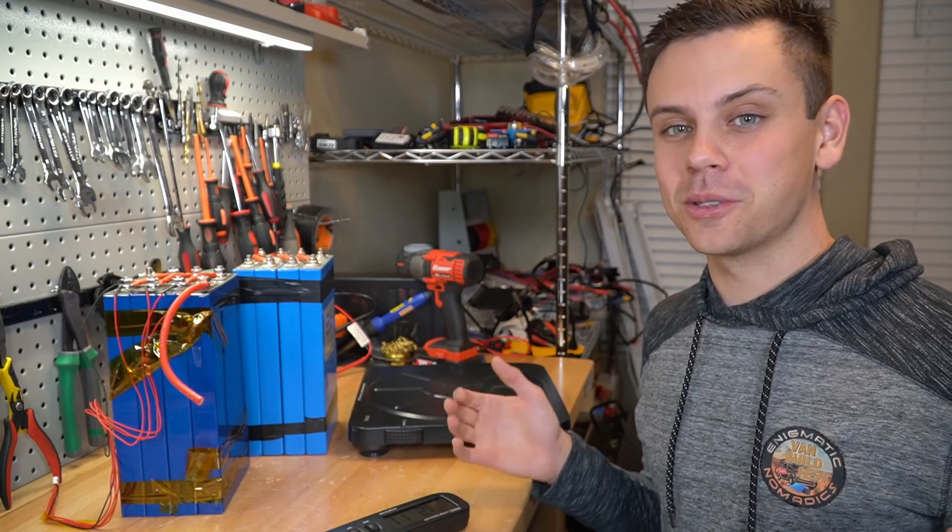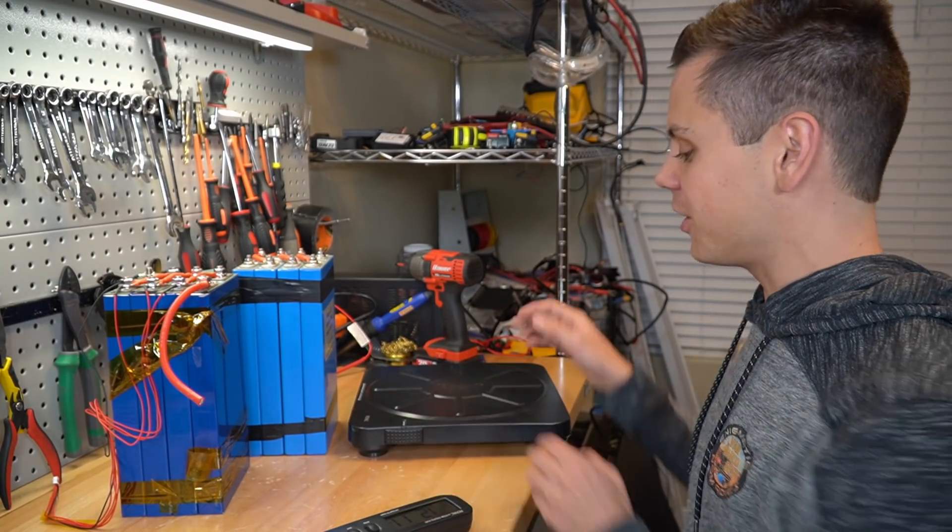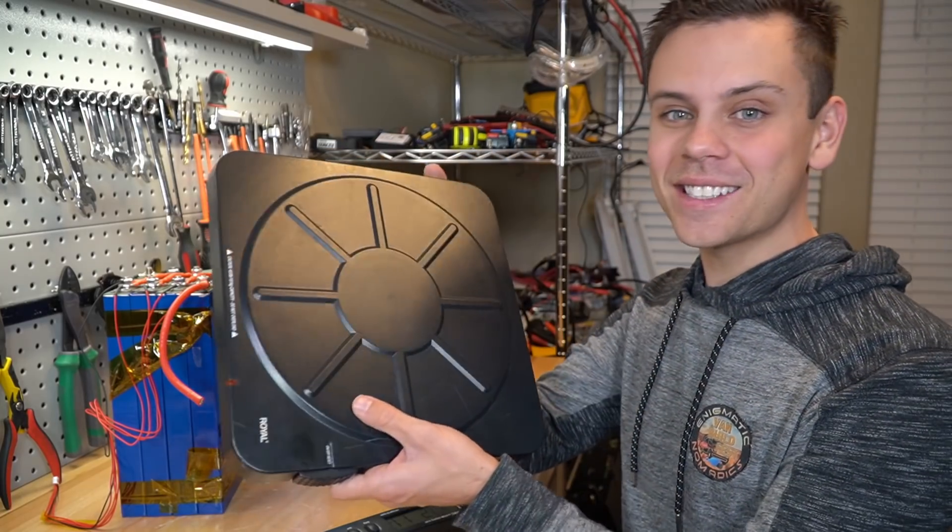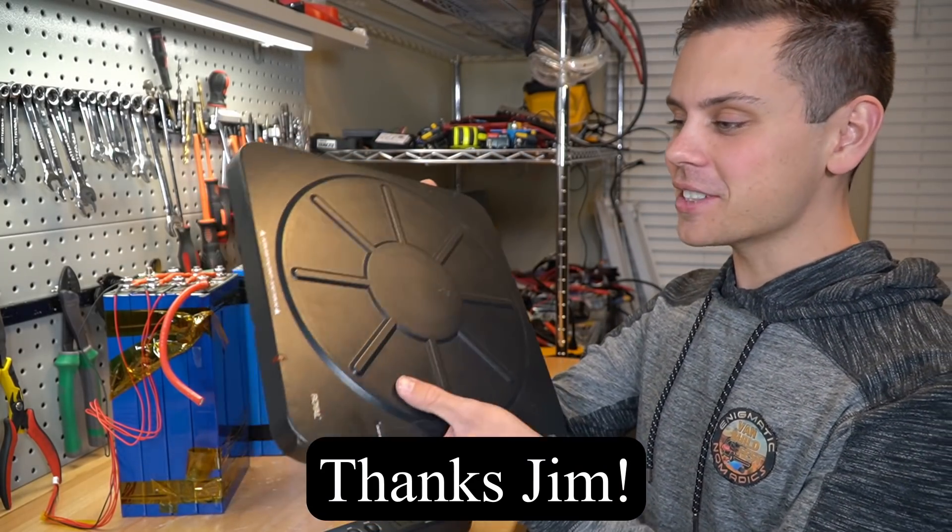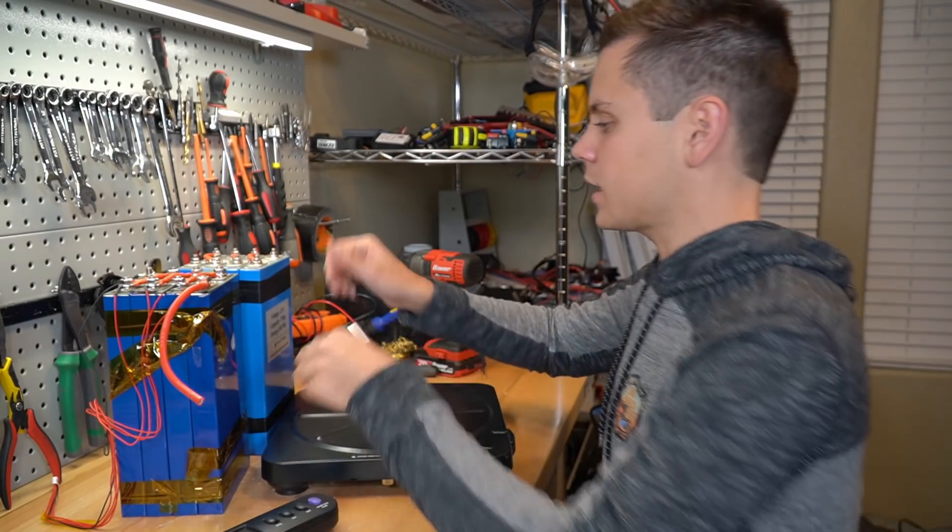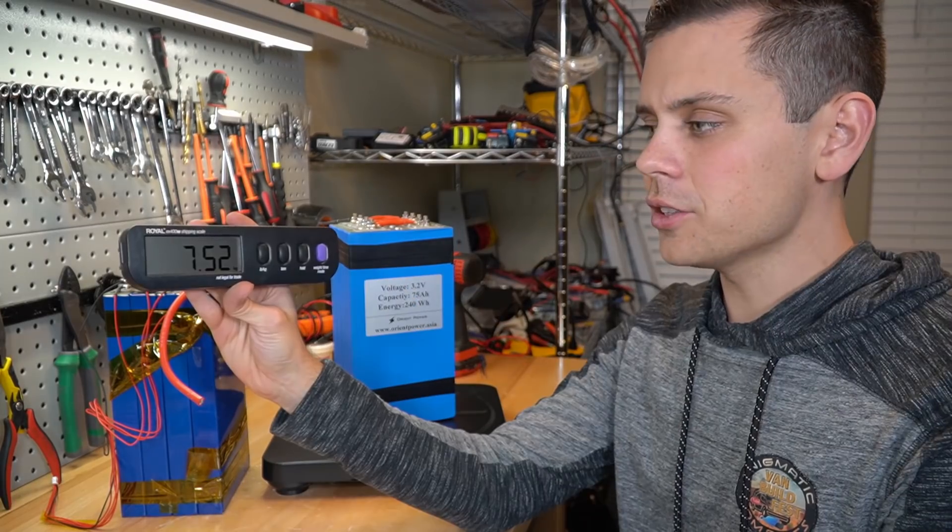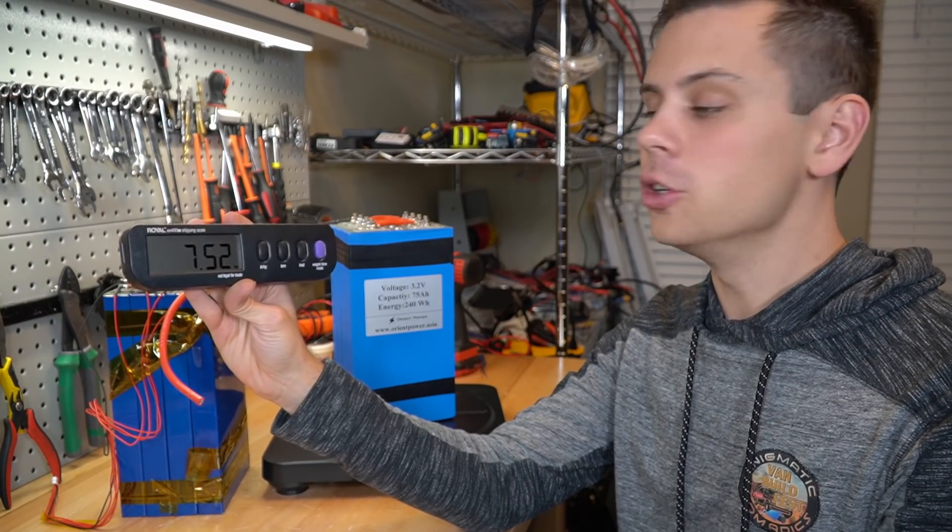And one of our viewers or subscribers named Jim, who's been on the forum and watching these videos for a long time, actually sent me a scale. So we have an accurate scale to assess the different weights of these batteries. So first we zeroed out the scale and let's do the 75 amp hour cells first. And these cells are 7.52 kilograms.